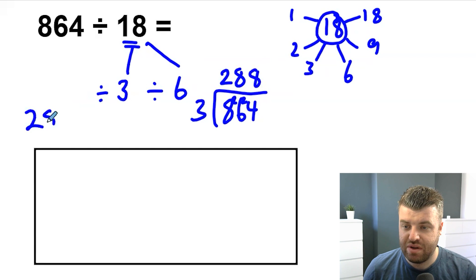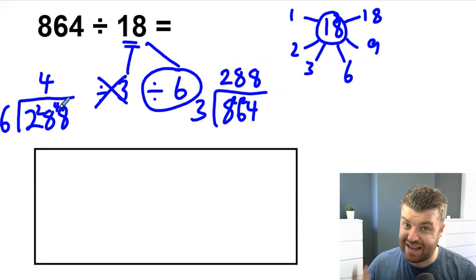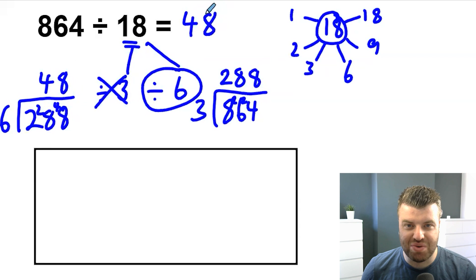So we have 288 now and the final step, we've done this, we're going to divide by 6. So bus stop once more, divide by 6 into 2 don't go. 6s into 28 are 4 times with 4 left over and 6s into 48 is 8. The answer is 48.